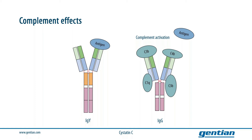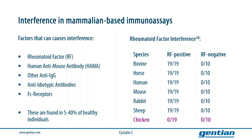The immune system of birds — avians — does not have complement systems. Interference from complement system molecules is therefore avoided when immunoassays like the Gentian cystatin C assay, based on avian antibodies, are used instead of mammalian immunoassays. Examples of complement interference include Fc receptors, human anti-mouse antibody, and rheumatoid factor. These are quite common, and 5 to 40% of healthy individuals have these present in their samples.